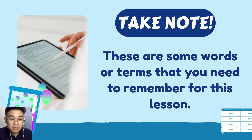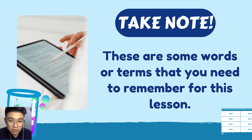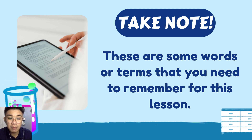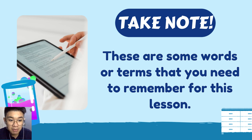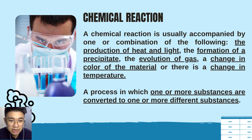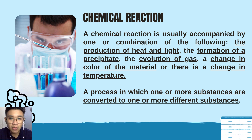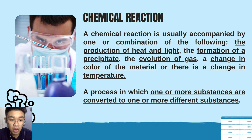Before we start, there are some terms you should take note of — words you need to remember for this lesson in order to completely understand it. The first term is chemical reaction. A chemical reaction is a process in which one or more substances are converted to one or more different substances.